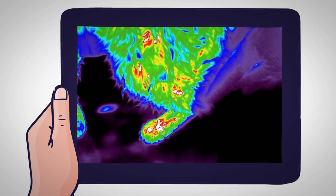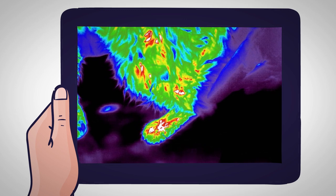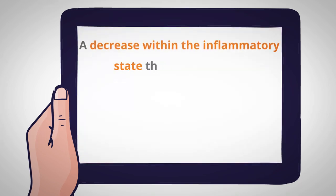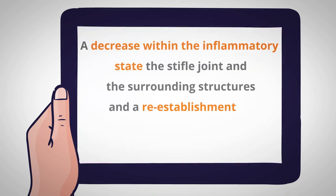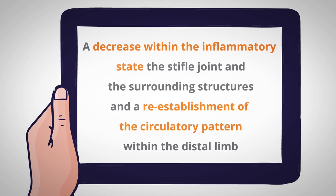The left stifle underwent a 96% decrease within all of the hyperthermic areas observed originally. There was also an increase within the thermal gradients associated within the phalangeal structures. Interpretation: a decrease within the inflammatory state of the stifle joint and the surrounding structures, and a reestablishment of the circulatory pattern within the distal limb.